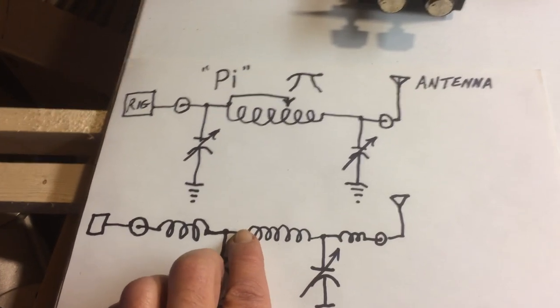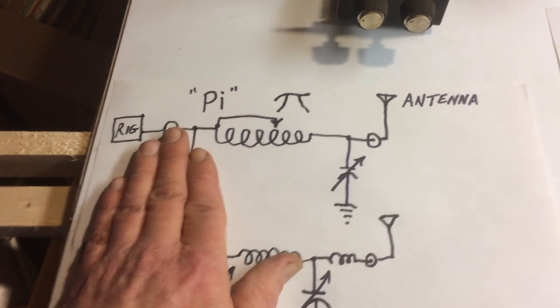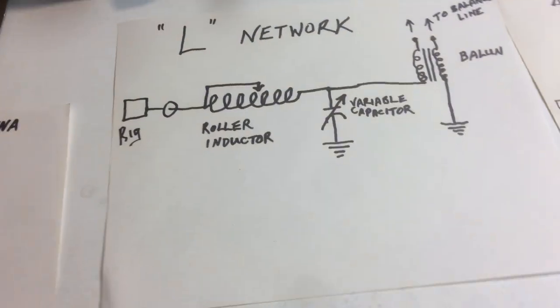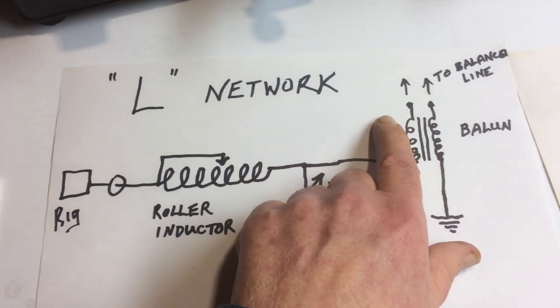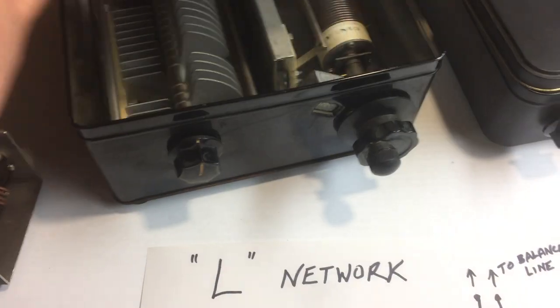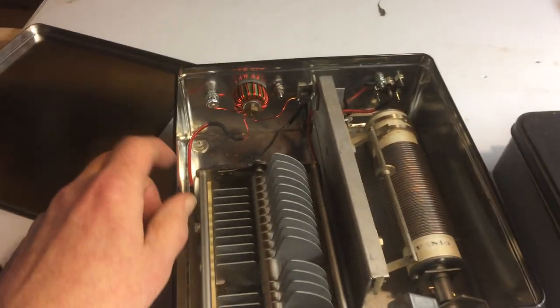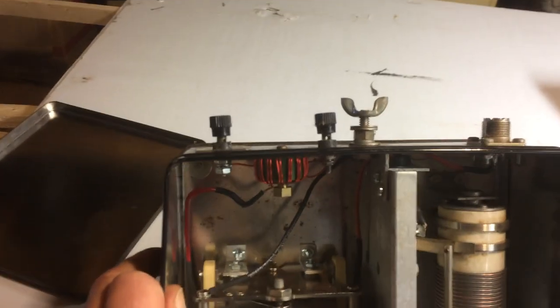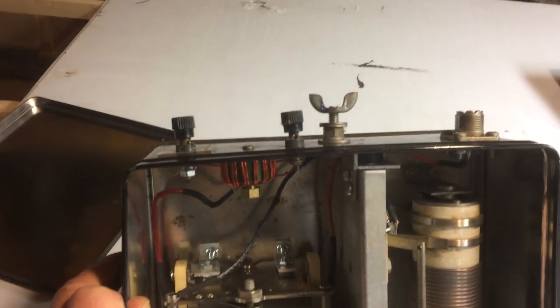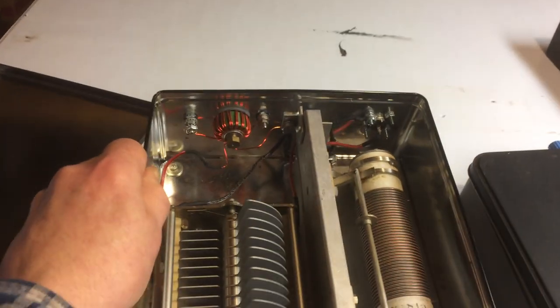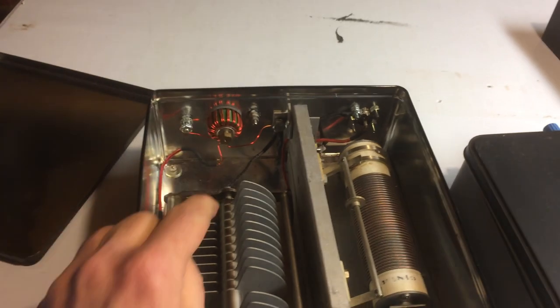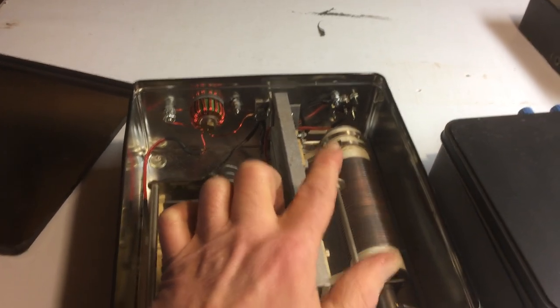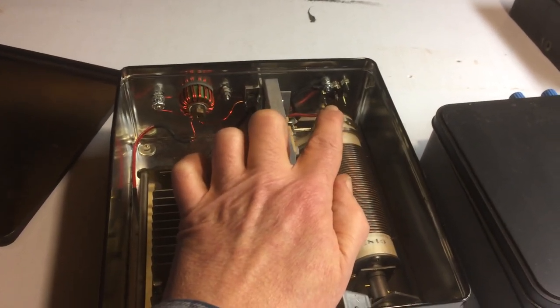Now if you took the Pi network and removed one of the capacitors, you'd have an L network, which is a very simple schematic, probably the simplest of the antenna tuners. And the L network is just this cookie can. You may have seen this in another video. Cookie can has binding posts here for the balance line connection. So your balance line comes in, goes through the balancing transformer, bypass a capacitor to the ground, and then straight through the inductor and out through a coax connector out to the rig.